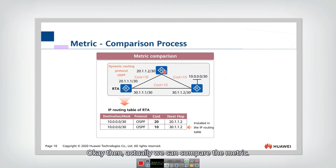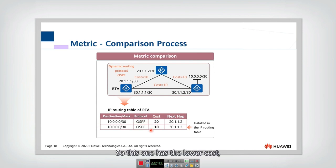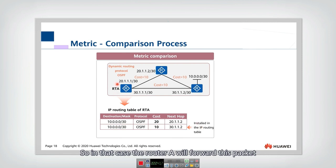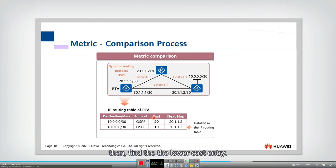We can also compare the metric. If the protocol and preference are the same, the router will further compare the cost and select the path with the lower cost. So the router selects the lower-cost path to forward the packet. In that case, Router A forwards the packet to next hop 30, through that link to the next hop router. To summarize: if preferences are different, find the higher preference entry; if preference is the same, find the lower cost entry.